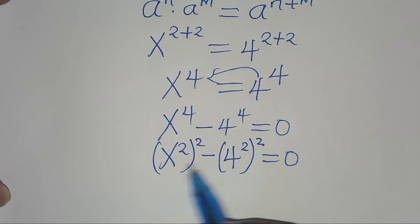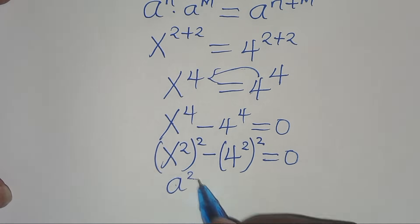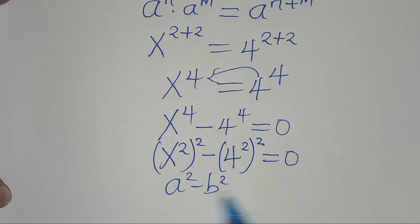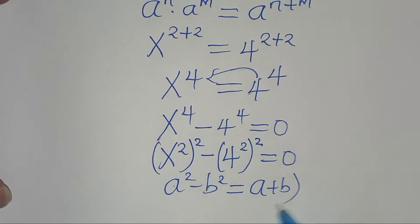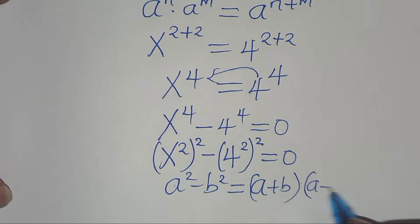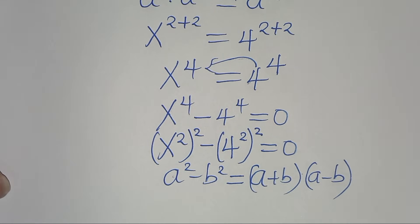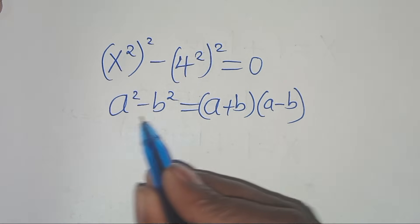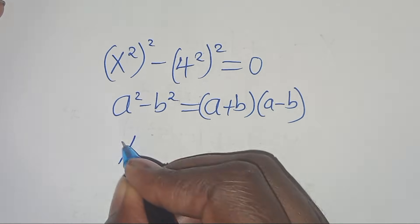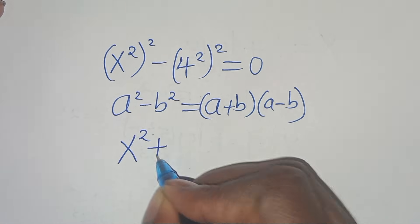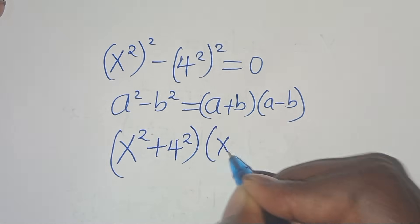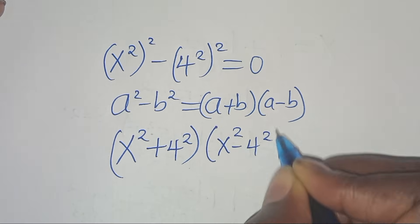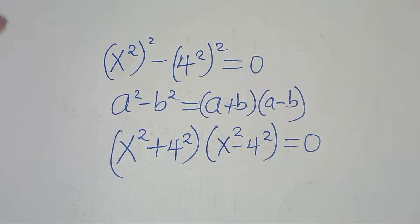This equation is in the form a² minus b², the difference of two perfect squares, which factors as (a+b)(a-b). Applying this identity, we get (x² + 4²)(x² - 4²) equals 0.